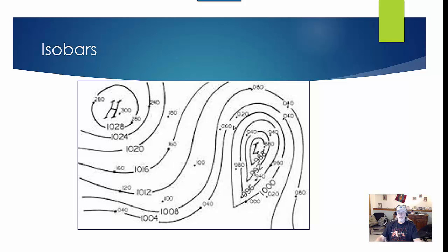One key thing to note on isobars is that the closer the isobars are together, the higher the wind speed. Closer lines, steeper terrain. Where the lines are spread farther apart, the lower the wind speed. When you see them really tight, like in this low pressure, that's pretty high wind speeds.